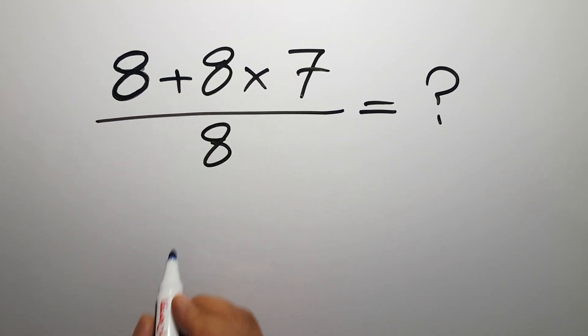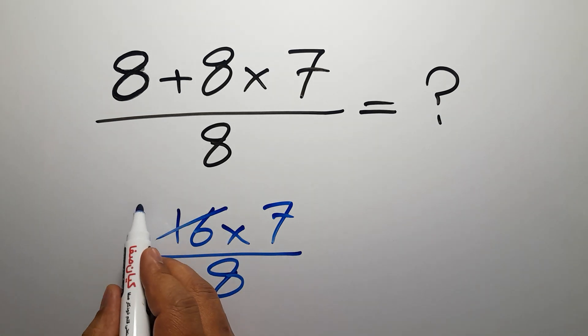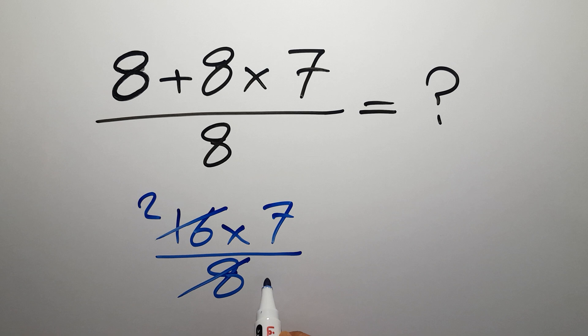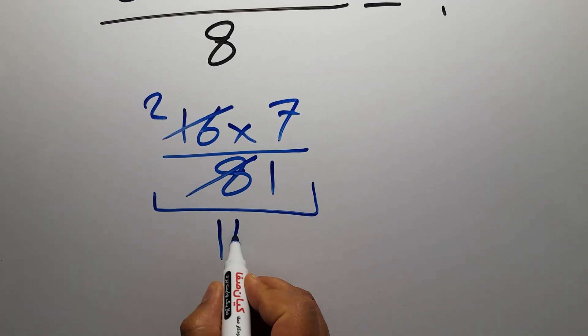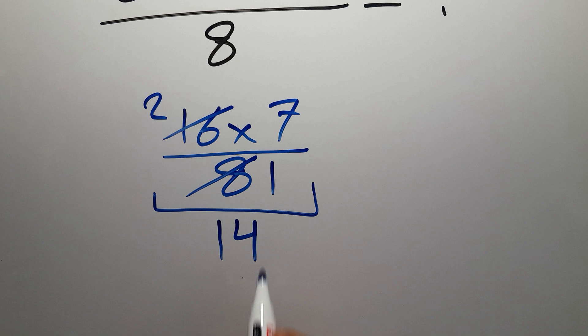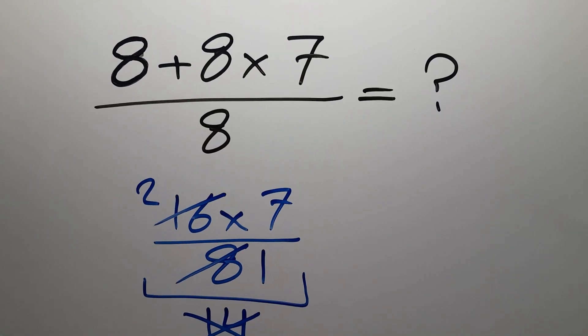8 plus 8 gives us 16, so 16 times 7 over 8. No, 16 divided by 8 gives us 2, and 8 divided by 8 gives us 1, so 2 times 7 over 1, which gives us 2 times 7, gives us 14. So just 14. But this answer is not correct because according to the order of operations in